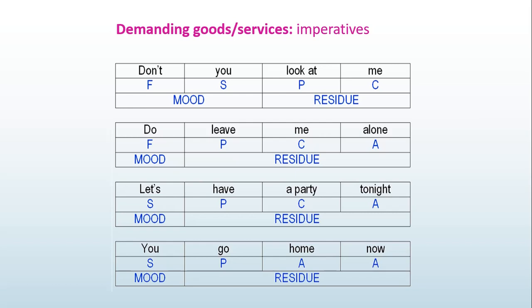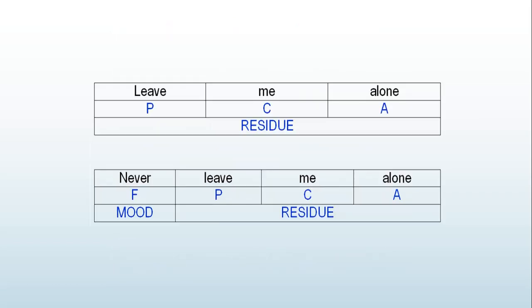Let's take a look at the third one. The word let's is actually comprised of the word let plus us and because it is a contraction it is considered the same. So it is considered to be only one. You go home now. You are provided the subject. Sometimes though you will find this type of sentences: Leave me alone. Never leave me alone.